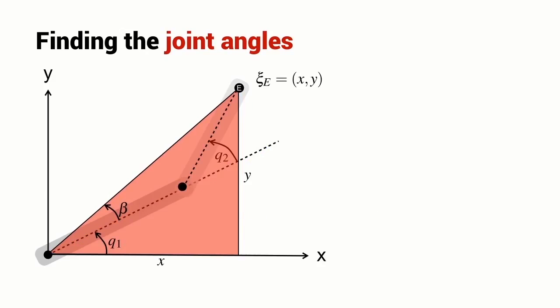Going back to the red triangle that we drew earlier, we can establish a relationship between Q1 and the angle beta. Introduce yet another angle, this one gamma and we can write a relationship between the angle gamma and the tool tip coordinates X and Y.